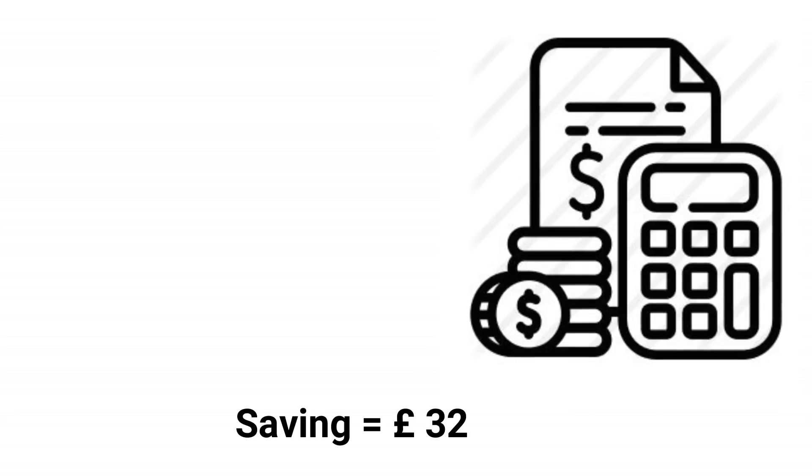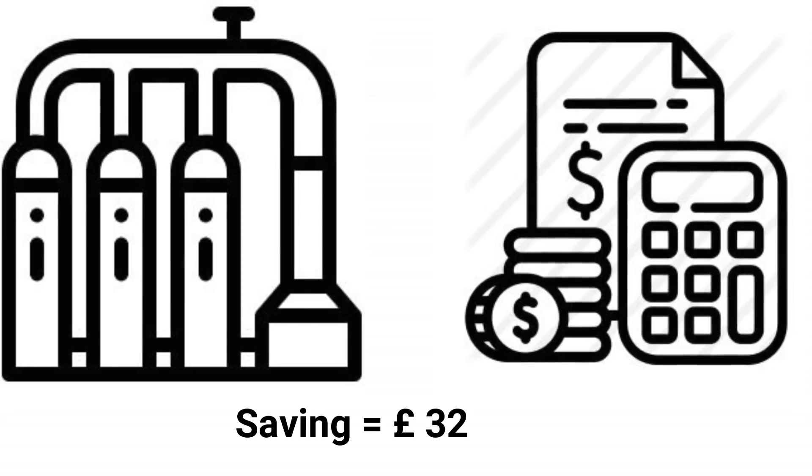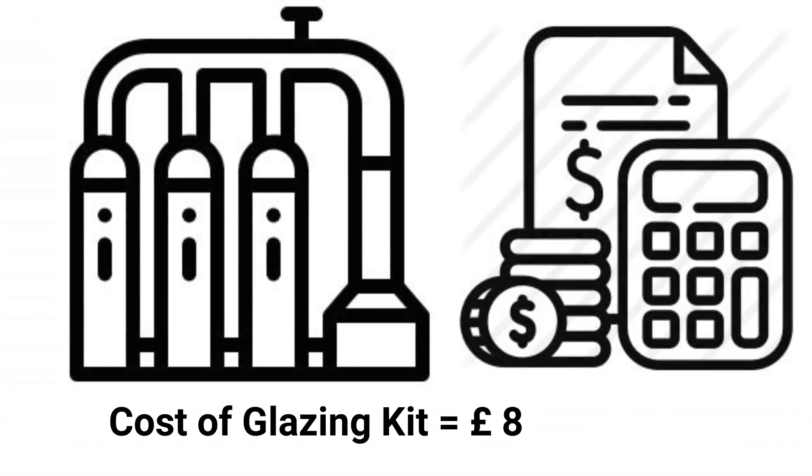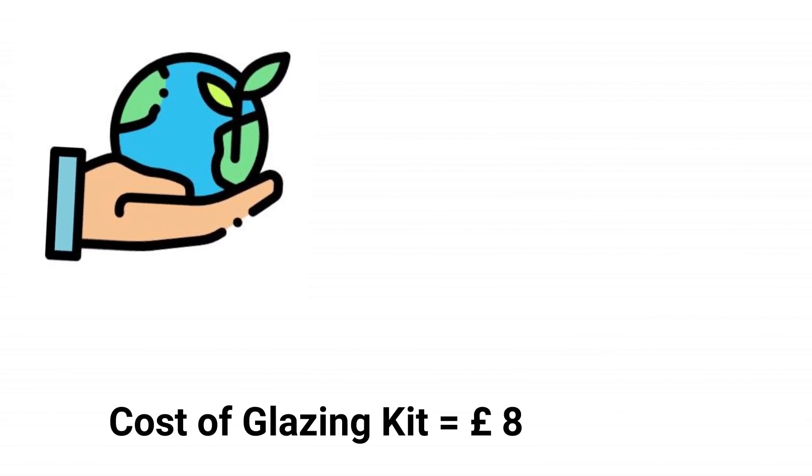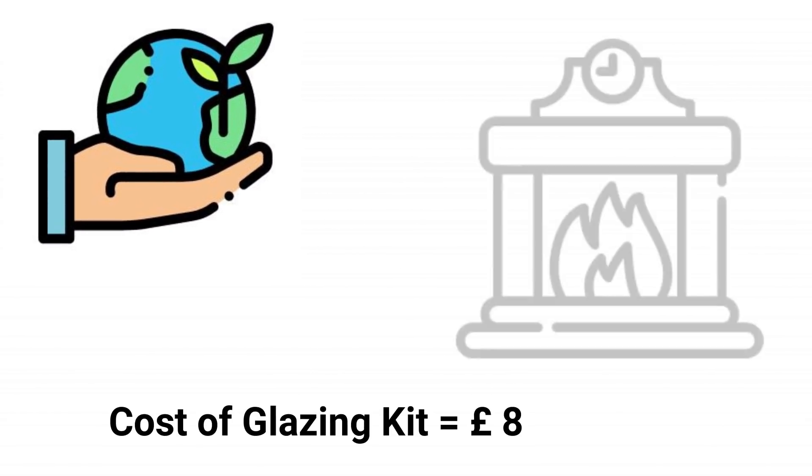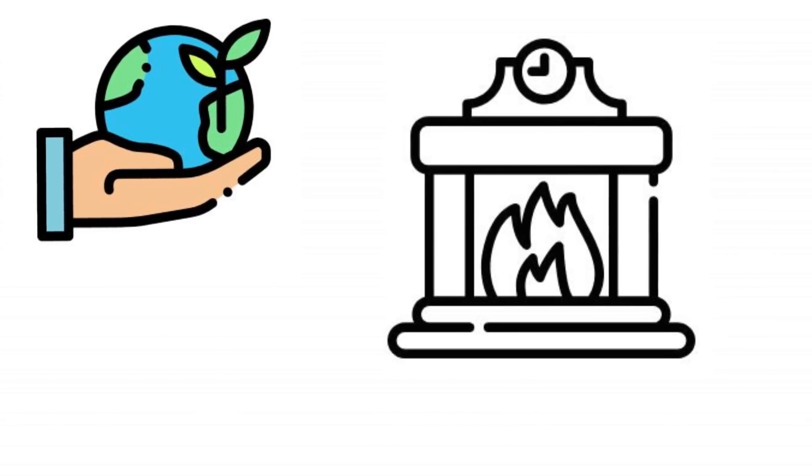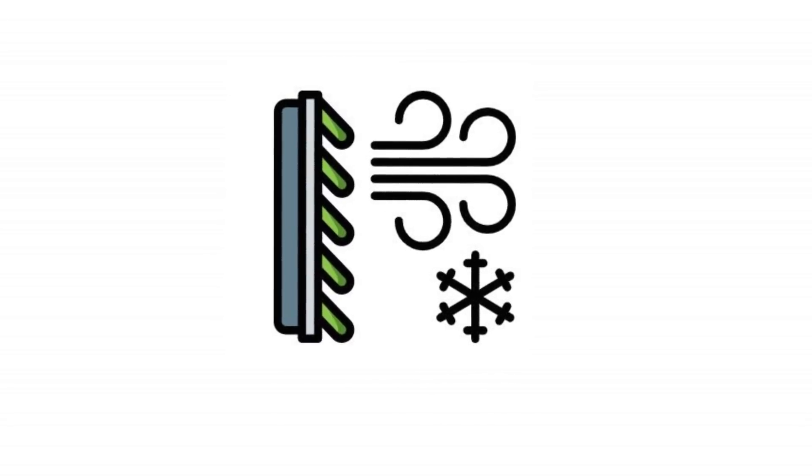For me, this will equate to a saving of 32 pounds of gas over the 6 month period. This does not sound much, but it still is 4 times what I paid for the glazing kit. It saves about 800 units of gas, which is great for the environment. And best of all, it will slow down the rate of cooling of my house through the night, so the house is not ice cold in the mornings.